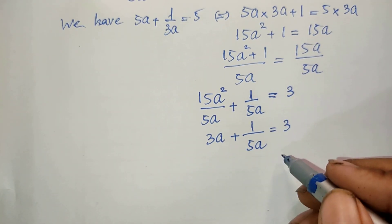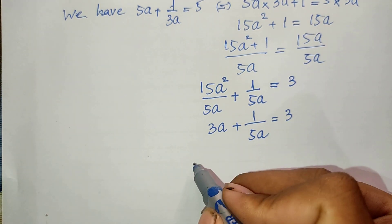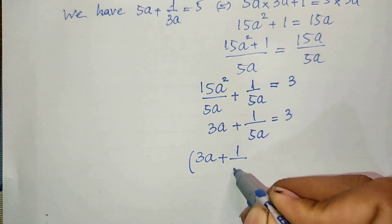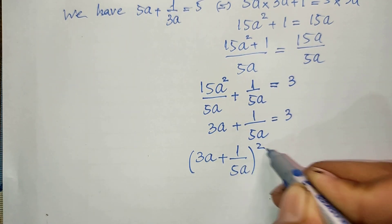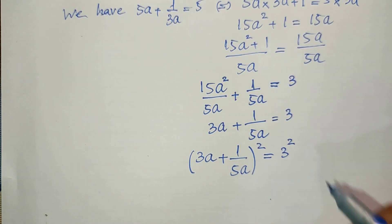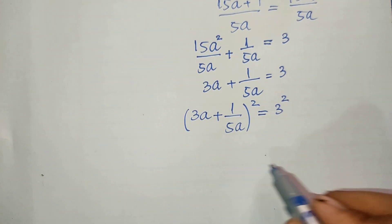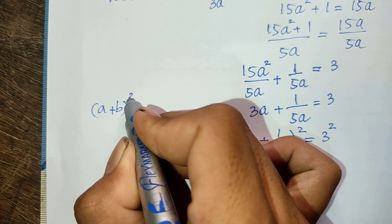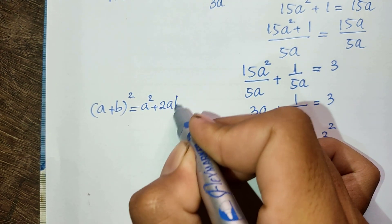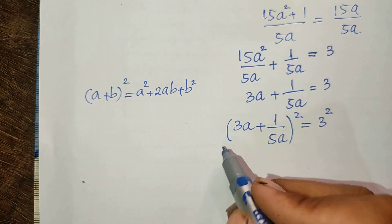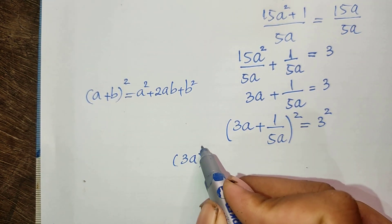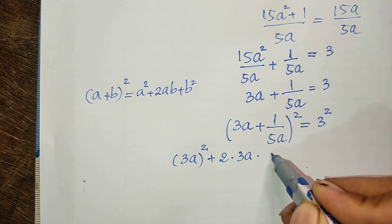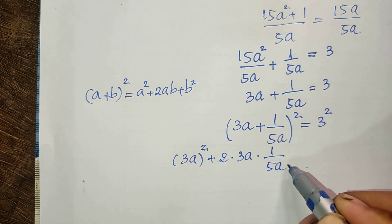Now I raise both sides of this equation to the square. So we get (3a + 1/5a)² equals 3² equals 9. We use the rule that (a + b)² equals a² plus 2ab plus b². So expanding, we get (3a)² plus 2 times 3a times 1/(5a) plus (1/(5a))².